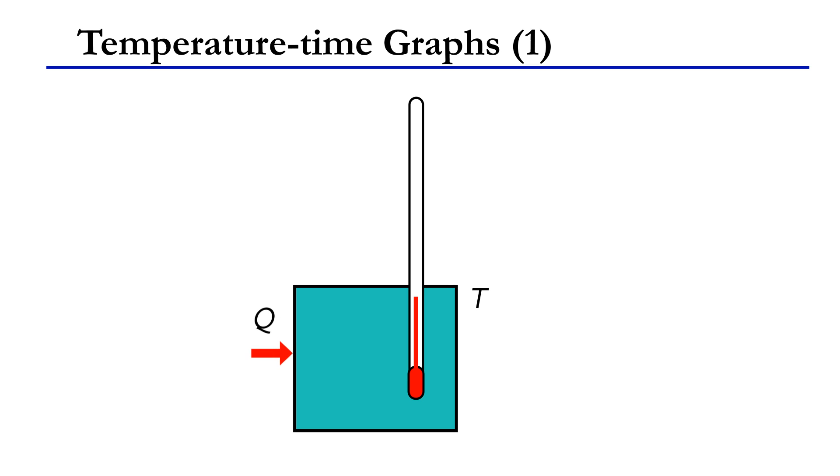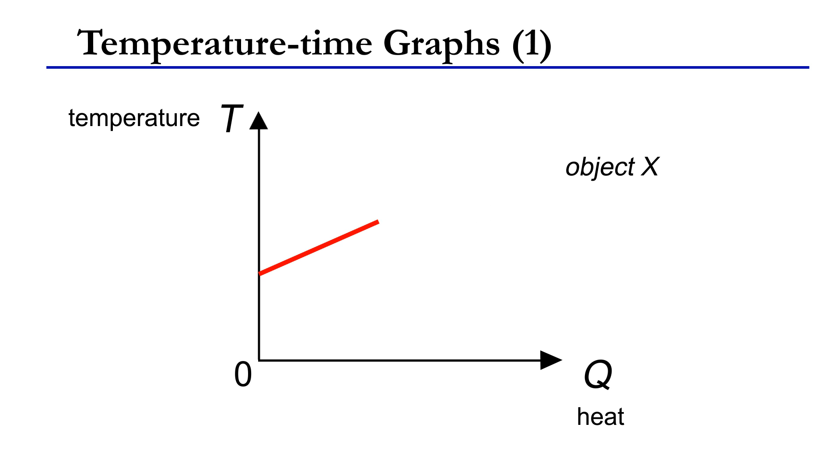When heat Q is supplied to an object X, its temperature T rises. This data can be shown in the temperature heat graph TQ graph as shown in the diagram.